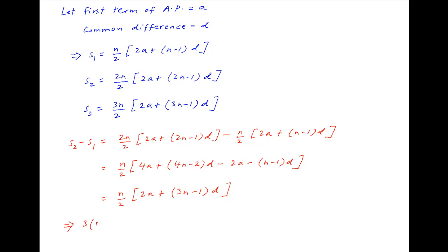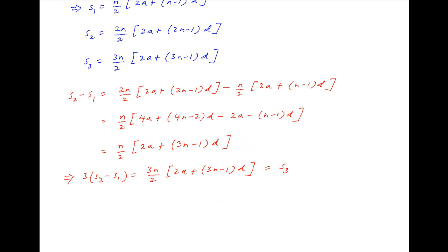Therefore, 3 times S2 minus S1 is equal to 3n upon 2 times in brackets 2a plus 3n minus 1 times d. Notice that this is equal to S3. Therefore, S3 is equal to 3 times S2 minus S1, which is the required result.